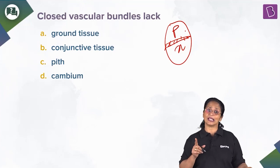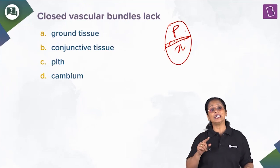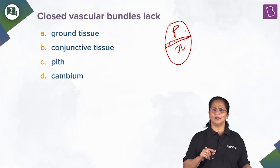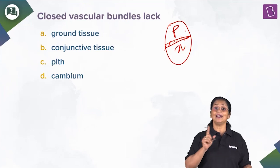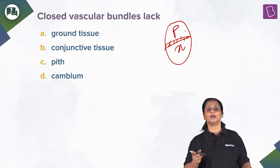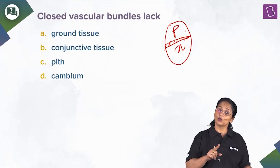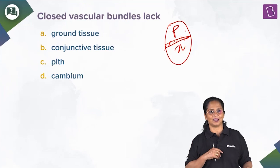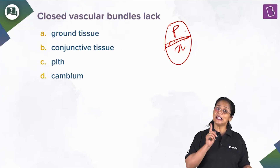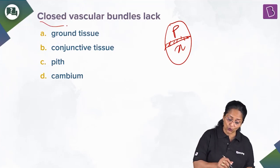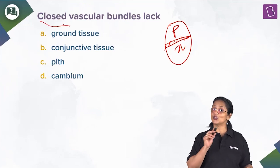In the root of dicot stem, the xylem and phloem are on different radii — the same applies to a monocot root. There is no cambium tissue separating the xylem and phloem. In the root of dicot stem, cambium is formed later, but we cannot call it an open vascular bundle. When there is cambium, it is open; when there is no cambium, it is said to be closed.